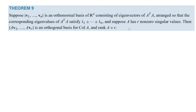That brings us to the theorem. Given an orthonormal basis of eigenvectors of A^T A with eigenvalues in descending order, if A has r non-zero singular values, then the vectors AV₁ through AVr form an orthogonal basis for the column space of A, and the rank of A equals that number of non-zero singular values. In the previous example, rank of A equals 2, because we had 2 non-zero singular values and 1 singular value that was zero.